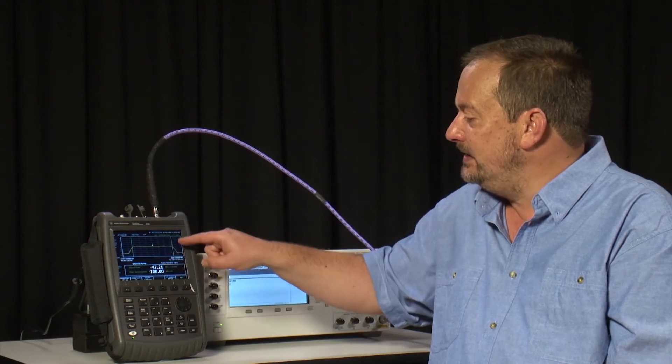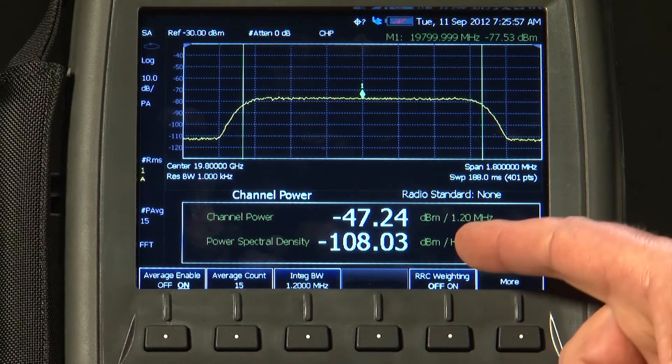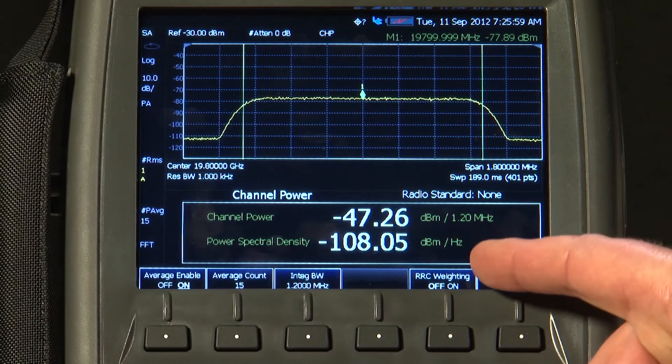the total power under that curve is about minus 47 dBm. And it will even calculate the power spectral density for you in dBm per Hz.